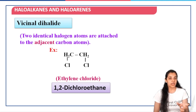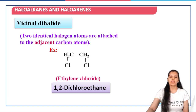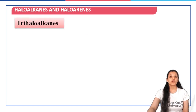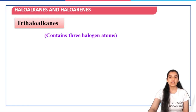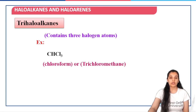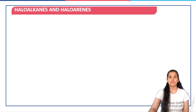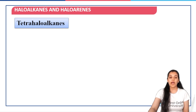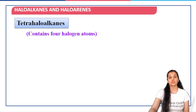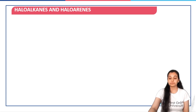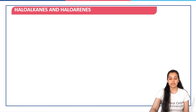This concept of geminal and vicinal dihalides is very important to understand. Next, we move on to trihalo alkanes — as is clear from the name, it contains three halogen atoms. For example, chloroform, or trichloromethane, CHCl3. Then we have tetrahalo alkanes where four halogen atoms are present — for example, CCl4, that is tetrachloromethane.